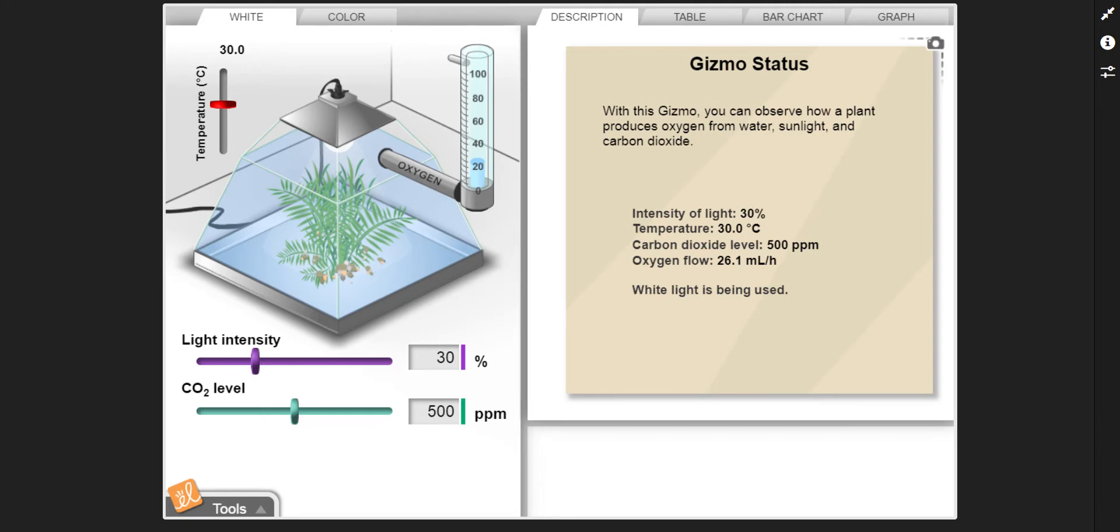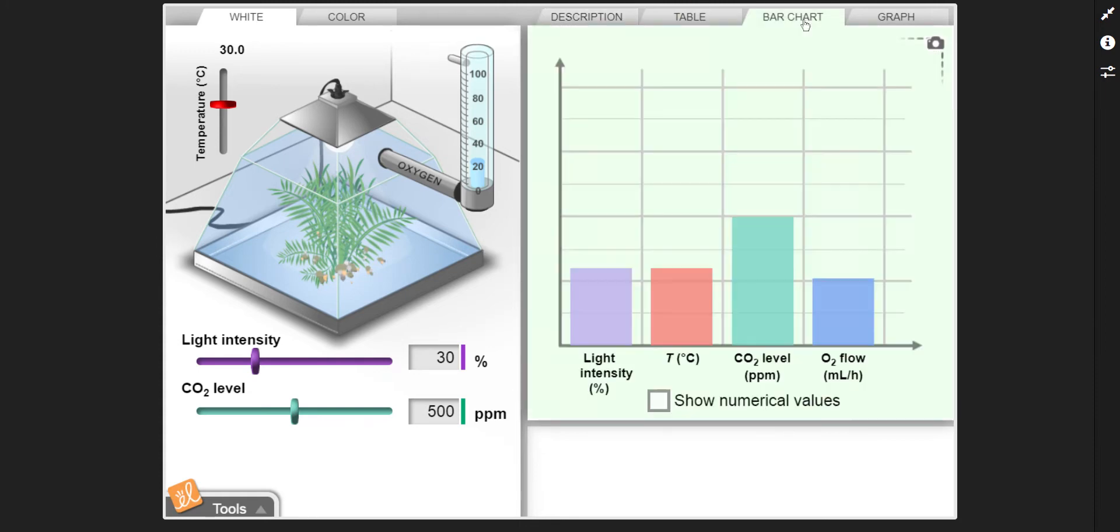So what you need to do start off with this one and you can start off right here with what they have: 30 degrees Celsius, 30% light intensity, 500 parts per million of carbon dioxide. Easiest way in my opinion to do this is to look at the numerical values. So we start here, we shift a little bit, we'll go a little bit and we'll go back down.